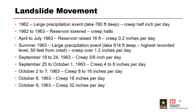When summer rolled around, they had a massive precipitation event. The lake reached 814 feet — the highest recorded level ever at Vajont Dam — and the mountain was moving by over an inch per day. They started lowering the reservoir again, and the creep went below an inch a day. But then in September, a few days later, the creep was up to four to eight inches per day. The plan hadn't really worked.